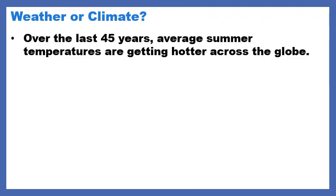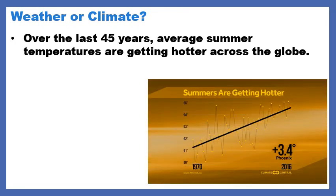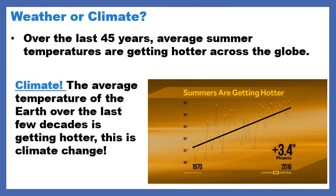Here's our last example: over the last 45 years, average summer temperatures are getting hotter across the globe. This shows summer temperatures from 1972 to 2016 — you can see the overall pattern is increasing in temperature. Is this climate or weather? This is climate. The climate is stable, but it can change. The average temperature of Earth over the last few decades is getting hotter, and this is climate change. Climate change is natural, but the current climate change we're seeing is a direct response to humans — not just natural fluctuations — because we're putting so much carbon dioxide and other chemicals in the air due to manufacturing and transportation.